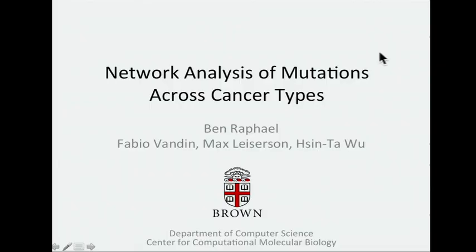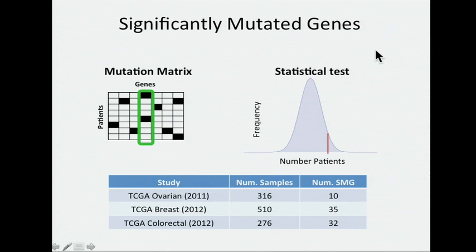Thanks for the opportunity to present our work today. One of the first analysis challenges when you sequence a new cohort of cancer patients is to identify significantly mutated genes that are mutated in more patients than you would expect by chance.